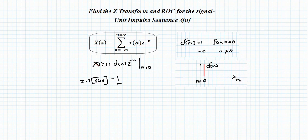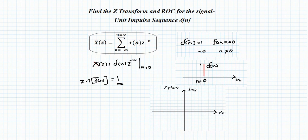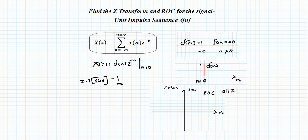The Z-transform of δ[n] equals 1. For the ROC, region of convergence, in the Z-plane the transform equals 1 for all values of Z — there is no restriction. So the ROC is the entire Z-plane. This is a standard result that we need to remember.